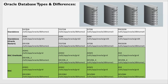This is an illustration: devdb, testdb, sitdb, and proddb as four example databases. For standalone, you don't need any ASM — you just need four Oracle homes. For Oracle Restart, you need ASM for each — ASM, ASM, ASM, ASM — and then devdb, testdb, SIT, and all four databases can run.